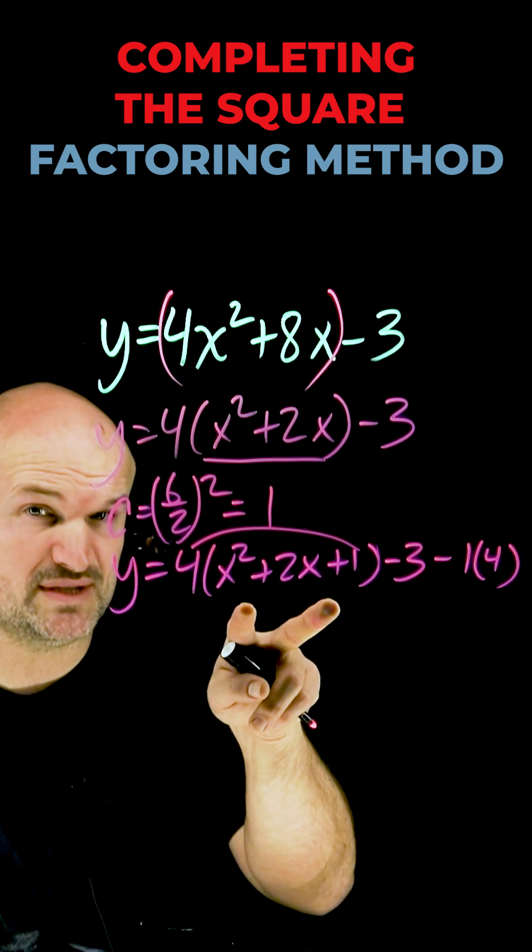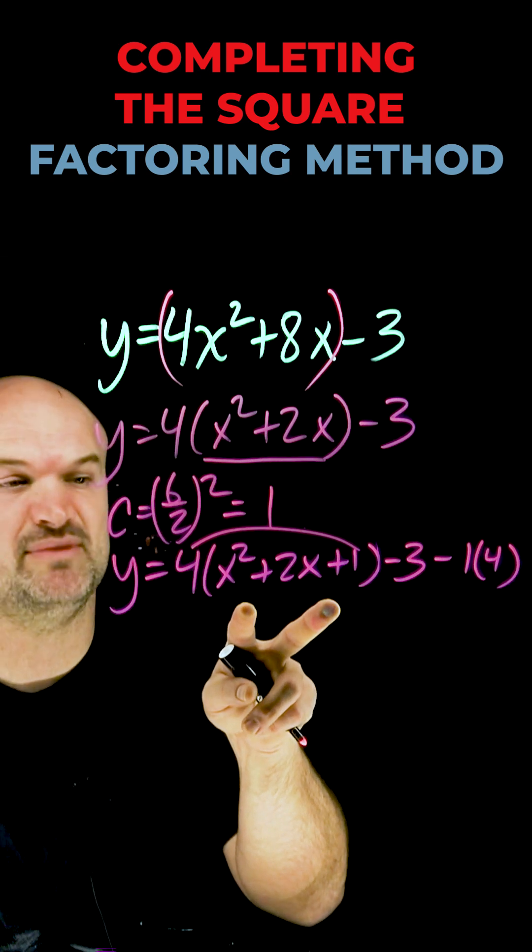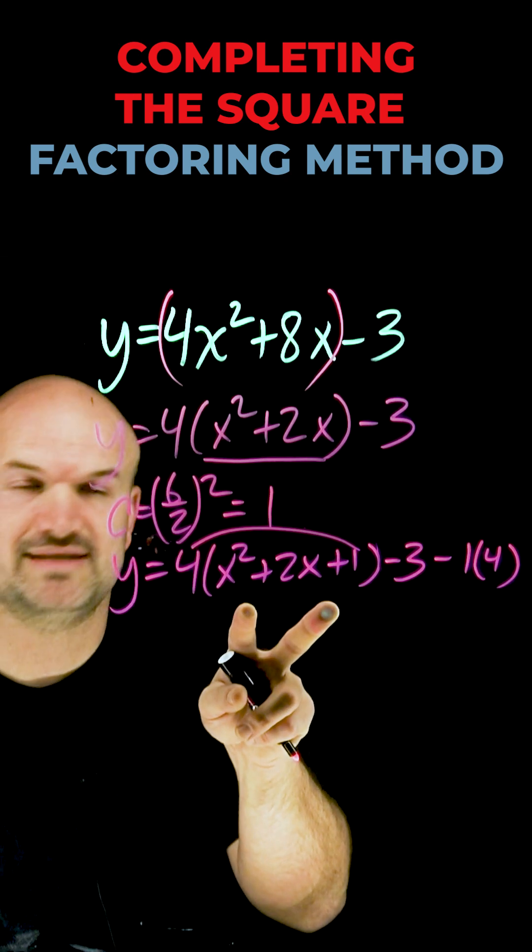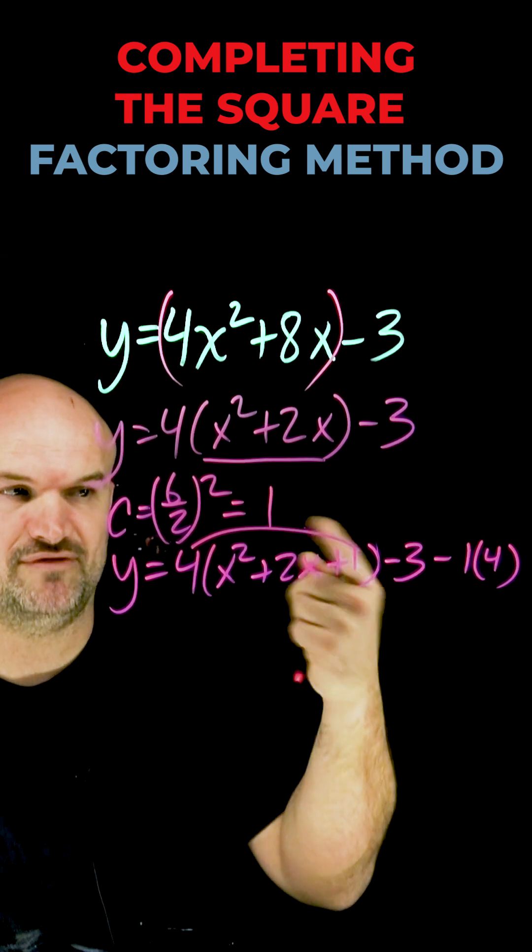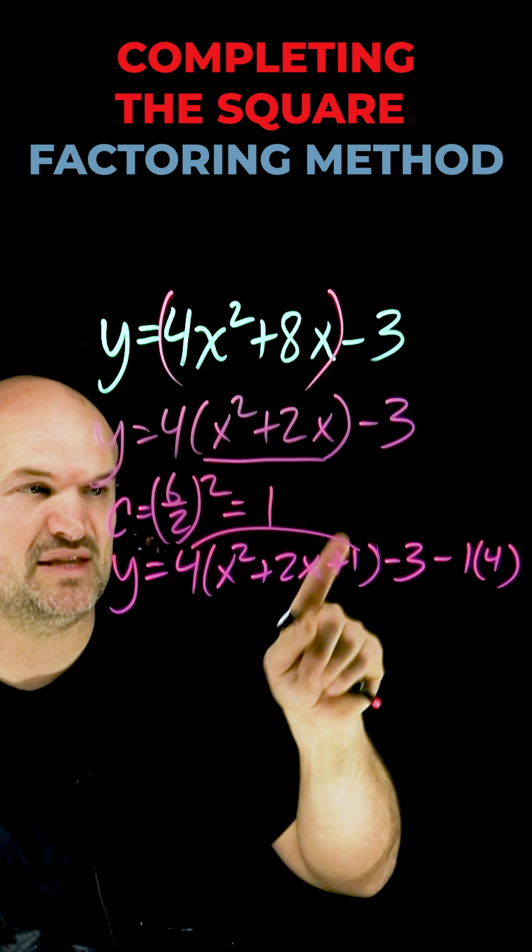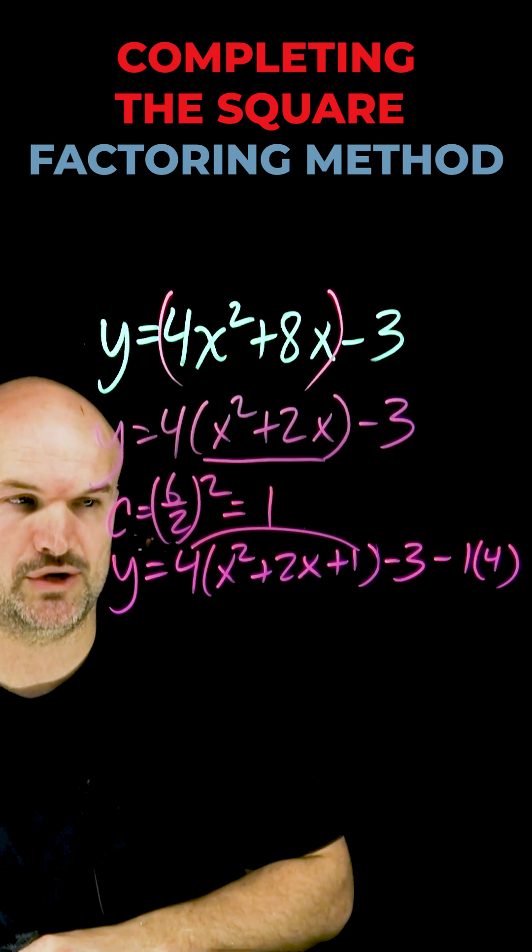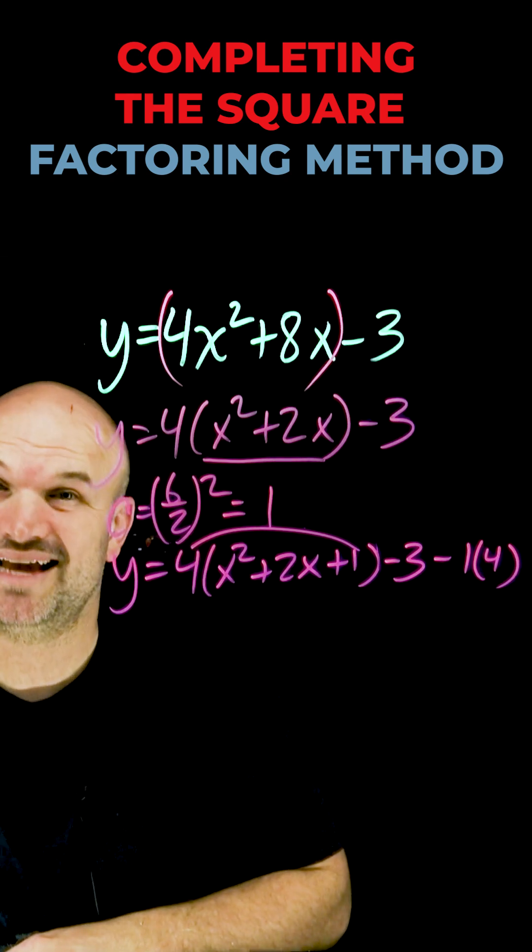Now the next step for completing the square: I know this is a perfect square polynomial, meaning it can be factored down into a binomial squared, the same binomial multiplied by itself. So to factor this, I'm looking for the number that is exactly the same that multiplies to give me 1 and adds to give me 2. This is going to be x plus 1.